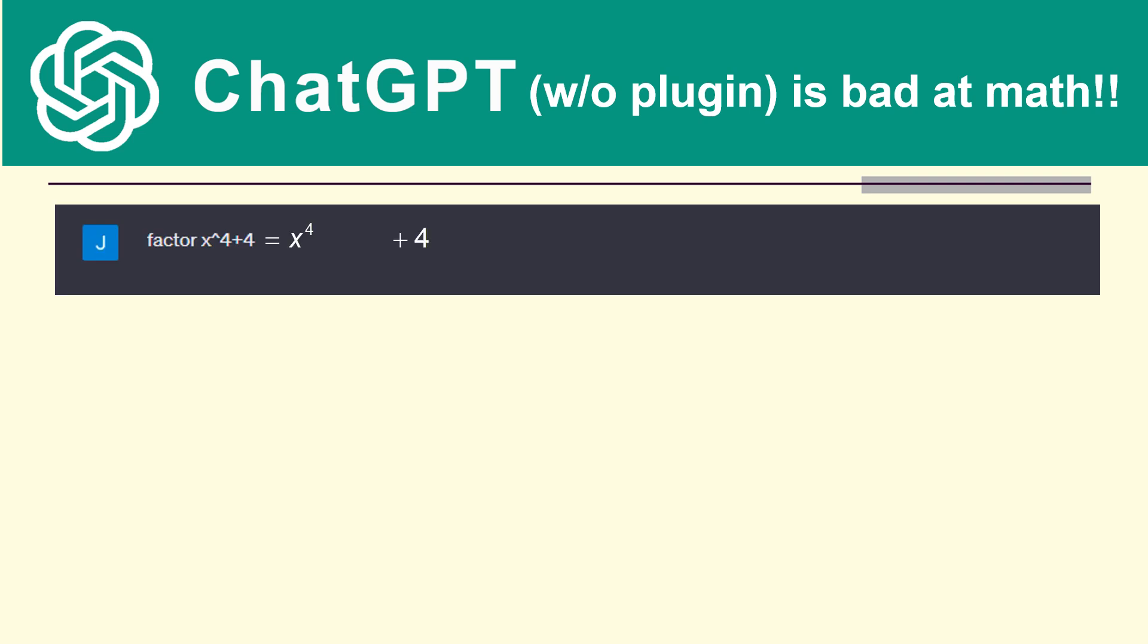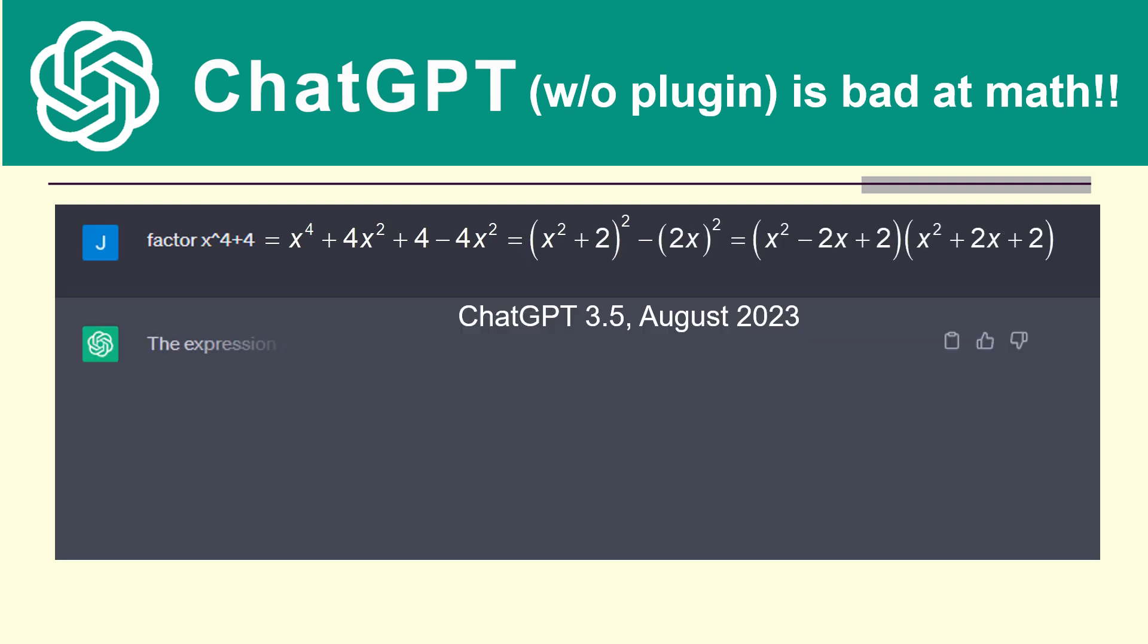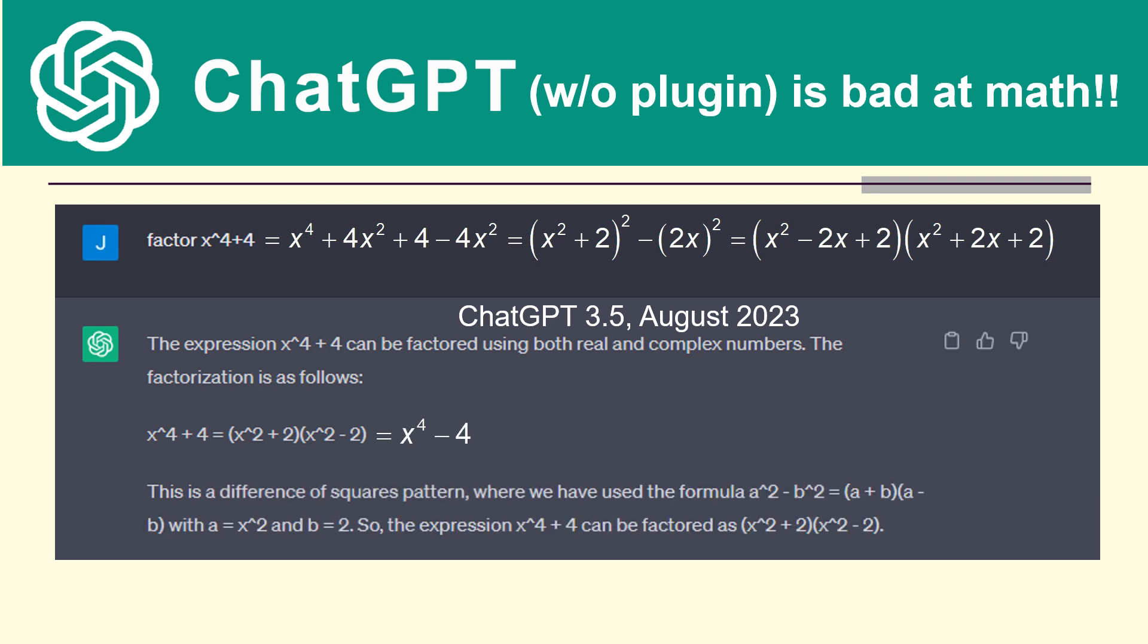Let's factor x⁴ + 4. So it's again a pretty straightforward problem, just a little bit of regrouping. 'The expression x⁴ + 4 can be factored using both real and complex numbers. The factorization is as follows: x⁴ + 4 = (x² + 2)(x² - 2). This is a difference of squares pattern where we have used the formula a² - b² = (a + b)(a - b) with a = x² and b = 2. So the expression x⁴ + 4 can be factored as (x² + 2)(x² - 2).' So there you see it's just flat out wrong. That's just wrong.